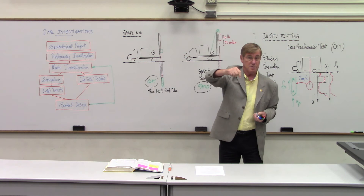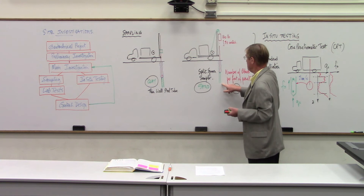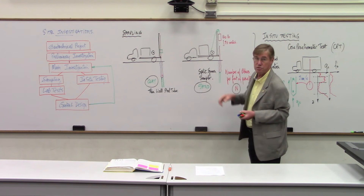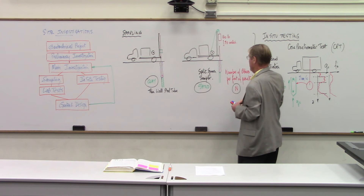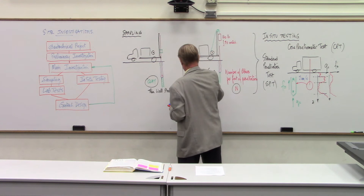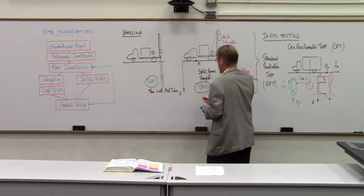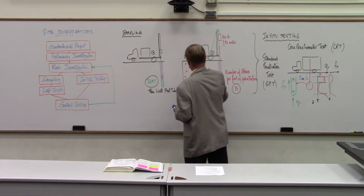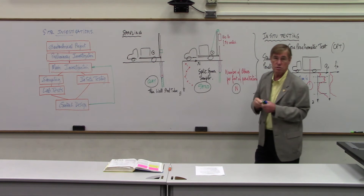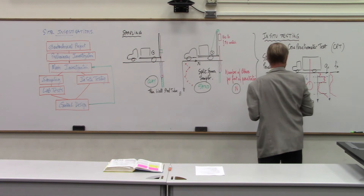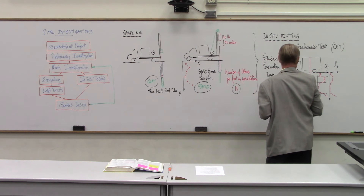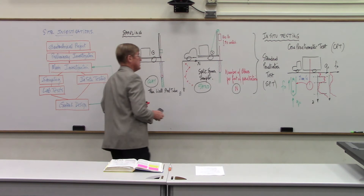From the SPT you get the N-value, number of blows per foot. From the CPT you get the point resistance Qc. One more in-situ test, developed around 1965 in France, is very, very useful — and it's called the Pressuremeter Test, or PMT.